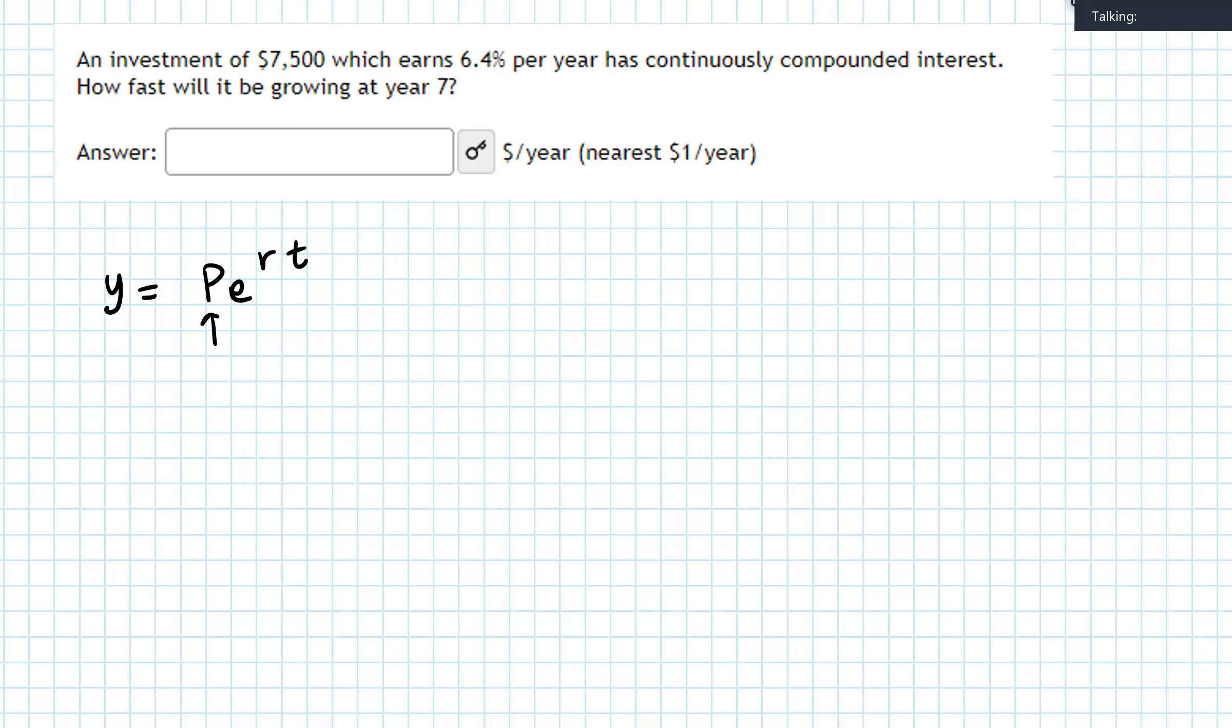p stands for principal amount, which is a fancy way of saying the starting amount. e is the constant, which is approximately 2.71. r is our annual interest rate. And t represents our variable, and it is the time in years. And so that's the thing that's changing.